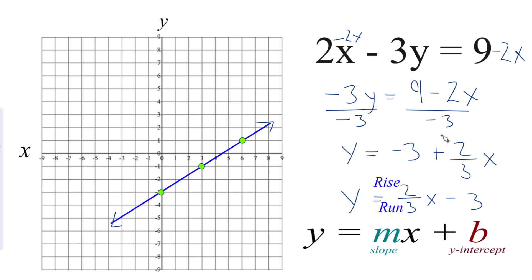And again, you could have used a table of values. You'd get the same line. This is probably just a little bit quicker. That's it. This is Dr. B. Thanks for watching.